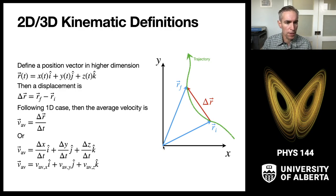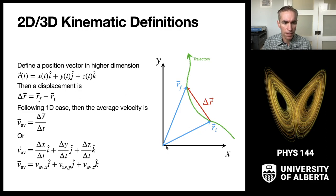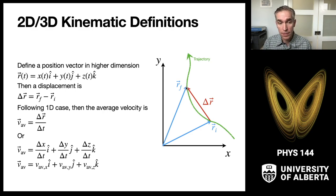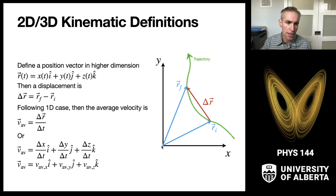We can think about the particle at two different points along a green trajectory curve. The position initially would be the vector from the origin of our coordinate system out to where the particle is at initially, then where it goes in the final position on the trajectory. A displacement vector is just the final minus the initial in a vector sense — it's the vector you add to the initial position to get to the final position.